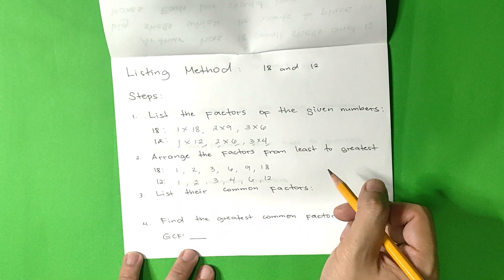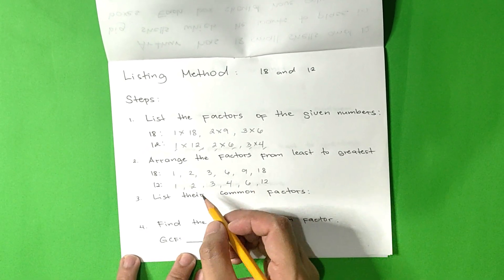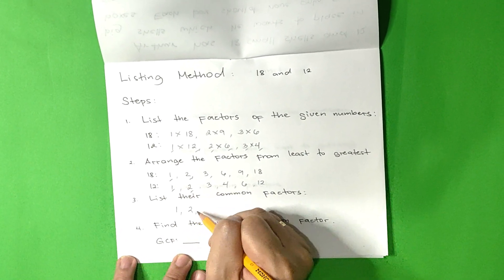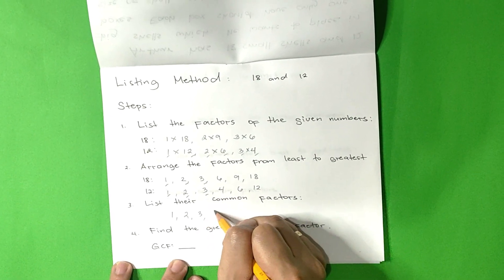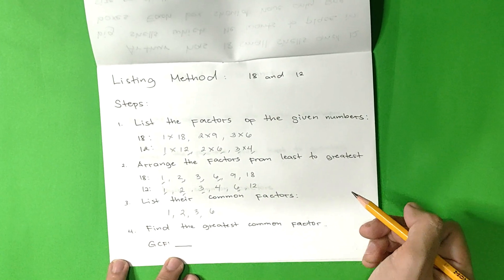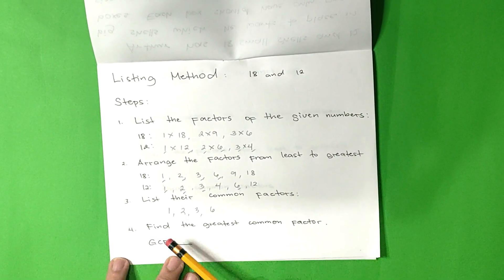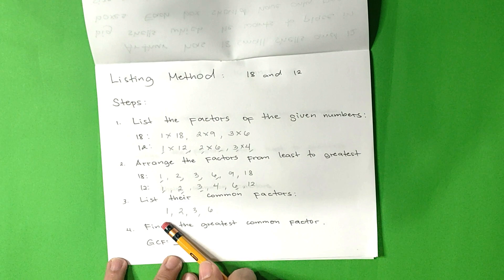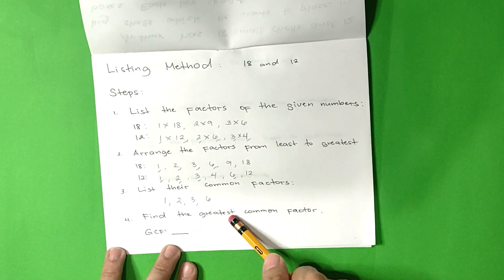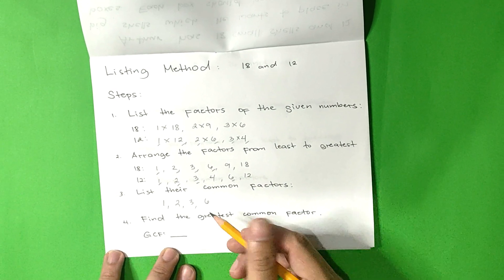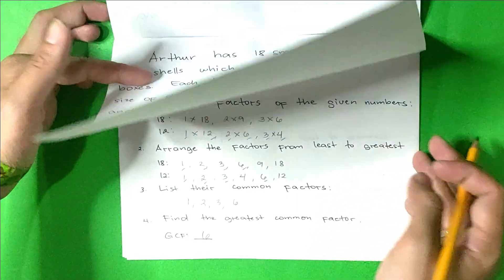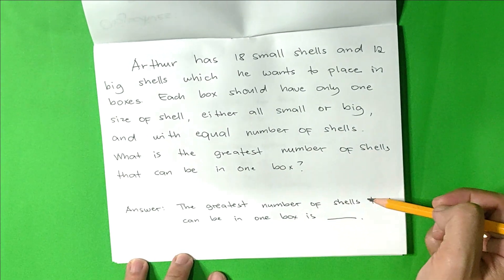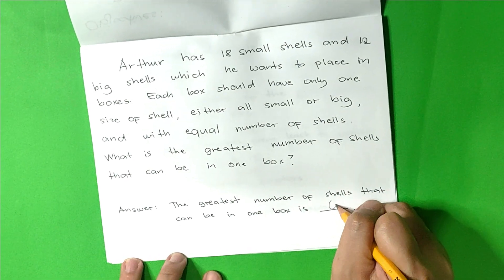The third step is list their common factors. The common factors are 1, 2, 3, and 6. And the last step is find the greatest common factor. Among the common factors, which is the greatest? Correct, it's number 6. So the answer for this math problem is, the greatest number of shells that can be in one box is 6.